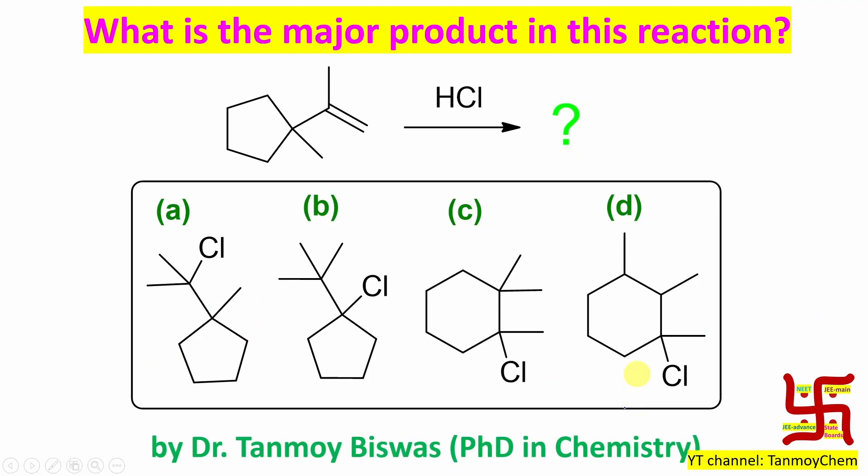Now if you go to 'What is the major product of this reaction?' - by the way, if you look at it initially, these two options are gone. So this is the product, option C.